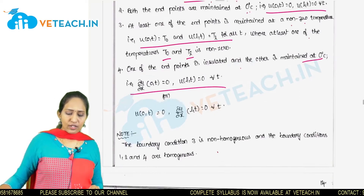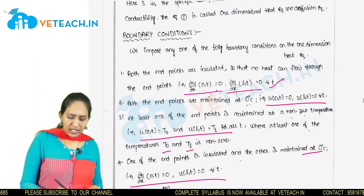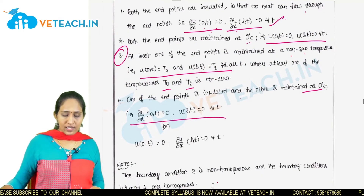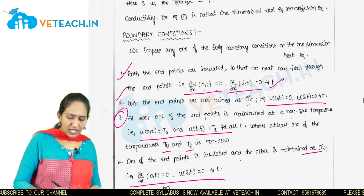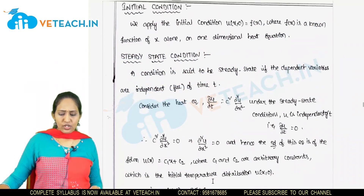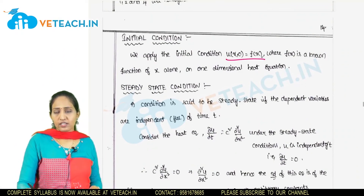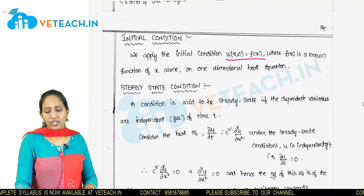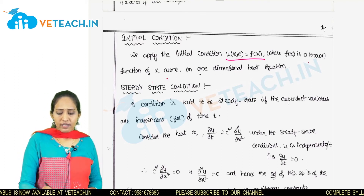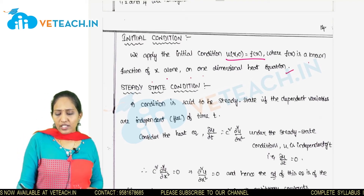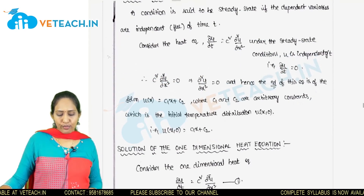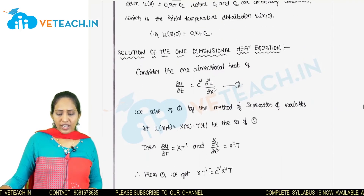Boundary condition 3 is non-homogeneous, while boundary conditions 1, 2, and 4 are homogeneous. The initial condition is applied as u(x, 0) = f(x), where f(x) is a function of x alone. This completes the formulation of the one-dimensional heat equation.